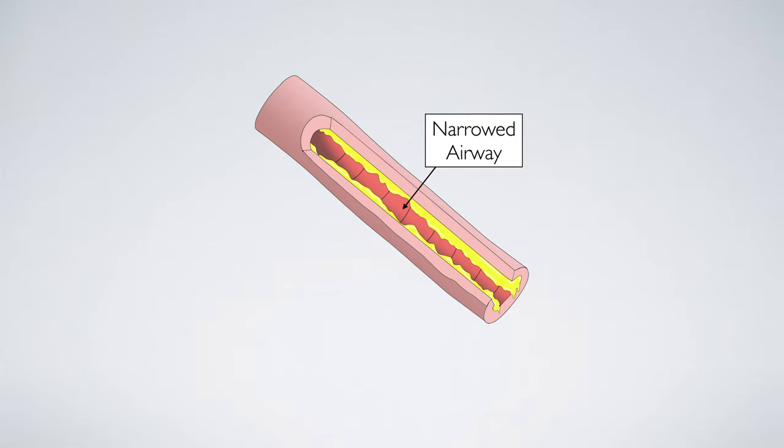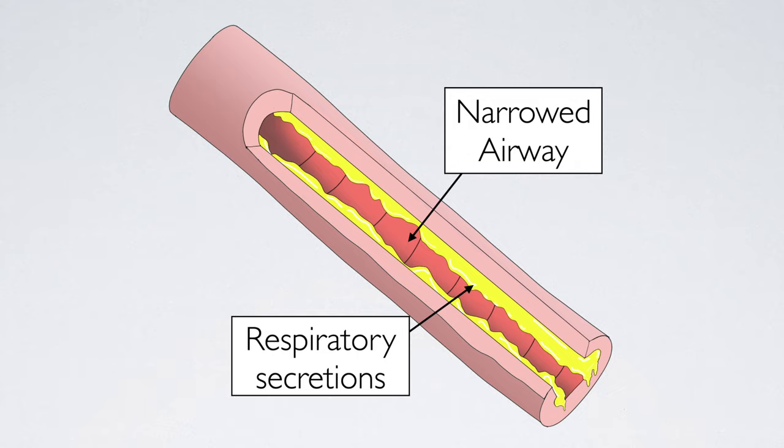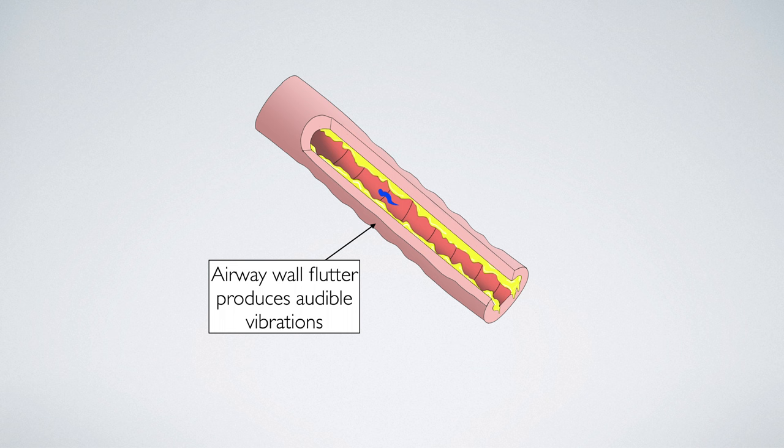In this image, the airway is narrowed due to respiratory secretions. As the air passes through, this produces a fluttering of the airway walls, and this generates audible vibrations that can be heard as a wheeze.